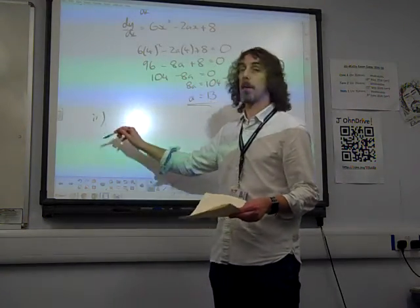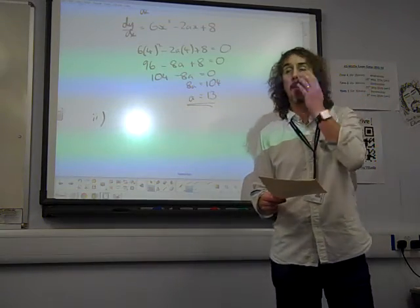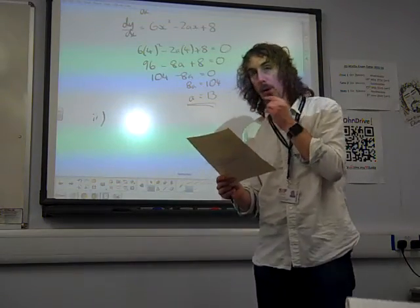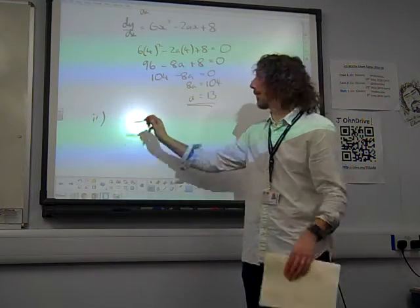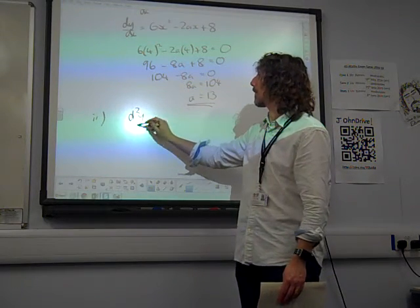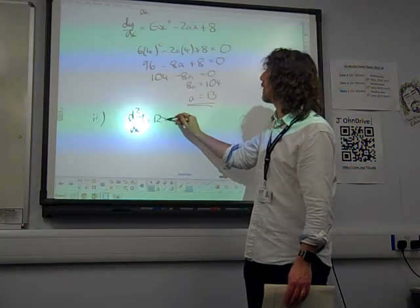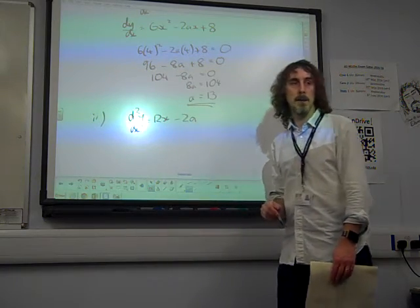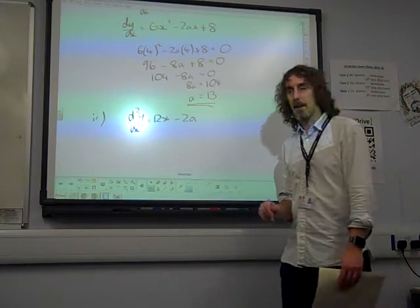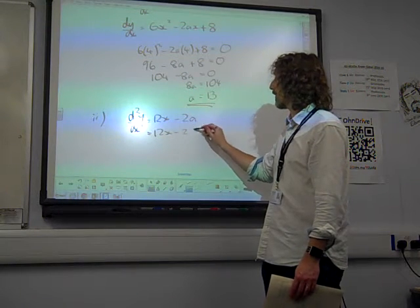Now, this is where this got a little bit mean. It says determine whether the point is a maximum or a minimum. We know we need to do this, to determine if it's a maximum or minimum, we find the second derivative. Which would be 12x minus 2a. Except we now know that a is 13. So that's 12x minus 26.